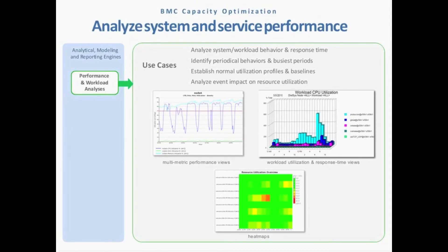Understanding through multi-system views, workload views, looking at application resources over time — capacity is a historical process that looks at historical data to predict the future. With that historical data, you can drive analysis, forecasting, planning, and so forth. Heat maps are another way that BCO provides a very high-level view of the hot spots and white space in your data center.